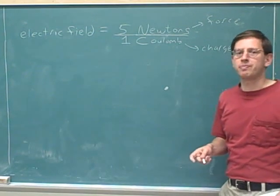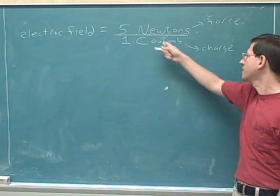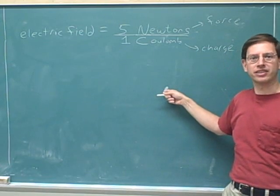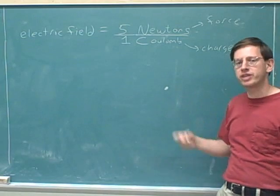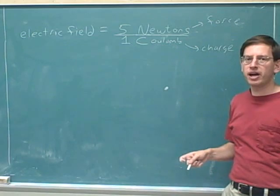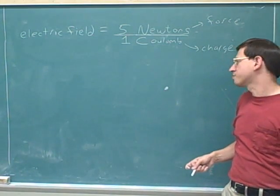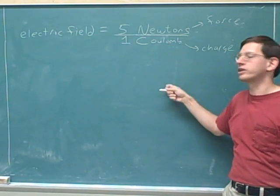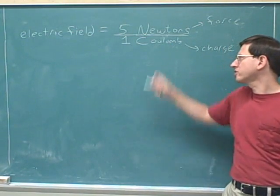Notice that this is a completely hypothetical idea. This is telling us what the force would be if there was a one coulomb charge at this point. In actuality, there are no charges at this point at all, so you can see that the electric field is a hypothetical concept. It tells you what would happen if you put a one coulomb charge at a point. There could actually be a two coulomb or ten coulomb charge here, or no charge at all.